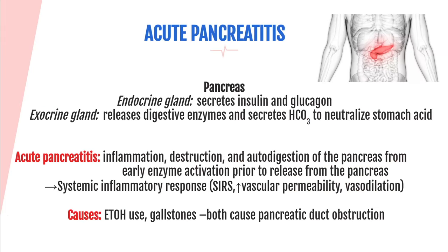Acute pancreatitis triggers a systemic inflammatory response, releasing inflammatory mediators that lead to increased vascular permeability or capillary leak, resulting in fluid loss from the vascular space and vasodilation. It's important to monitor fluid and electrolyte balance because these massive fluid shifts may result in hypovolemic shock. The pancreas has a head, body, and tail — it has an endocrine gland secreting insulin and glucagon, and an exocrine gland releasing digestive enzymes and bicarbonate to neutralize stomach acid.